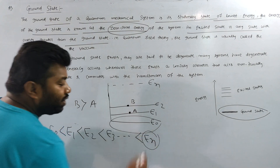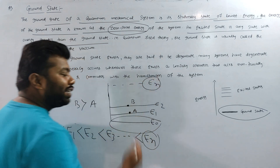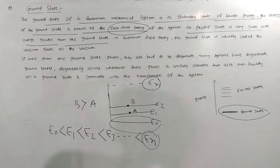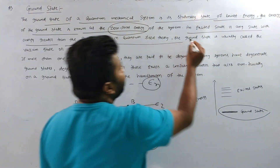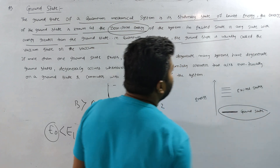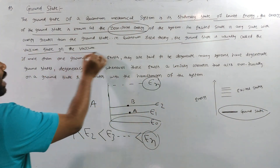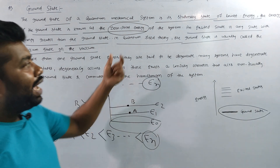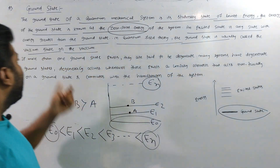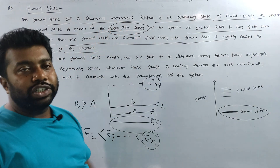What is the highest energy state? In quantum field theory, the ground state is usually called vacuum state or vacuum. We concur with vacuum state, also called vacuum state or zero point energy state.